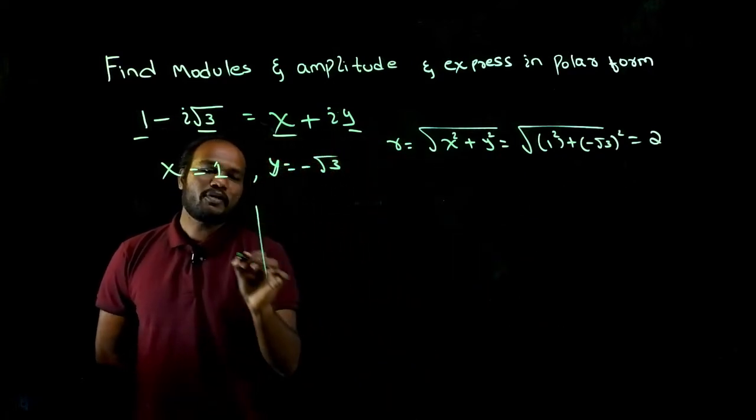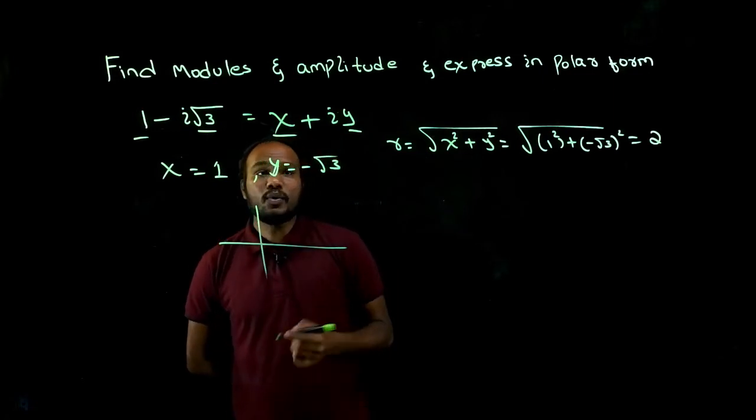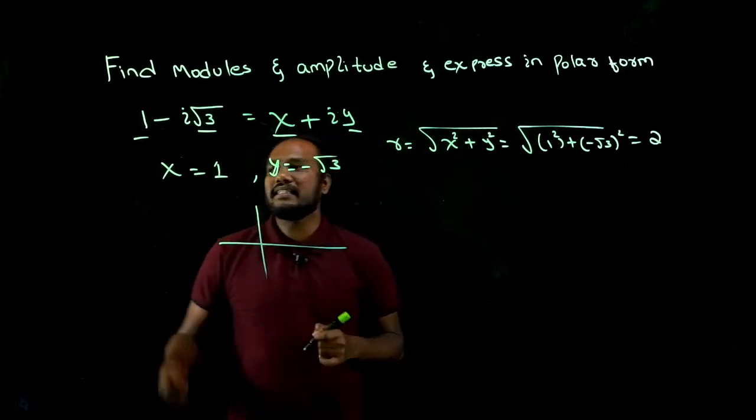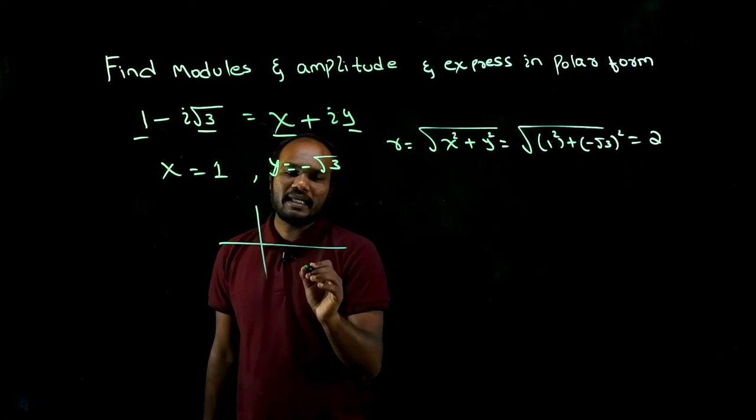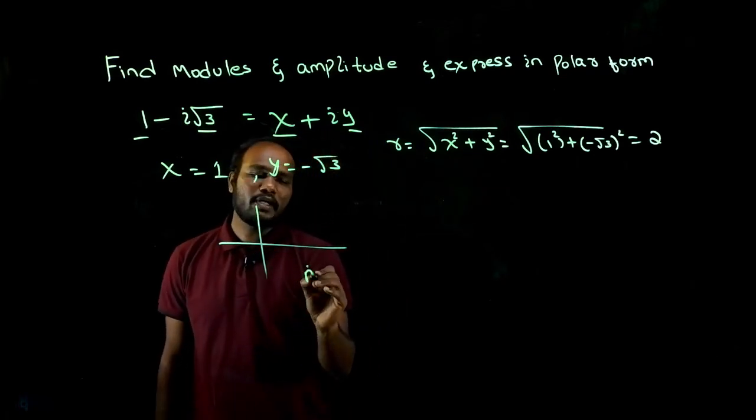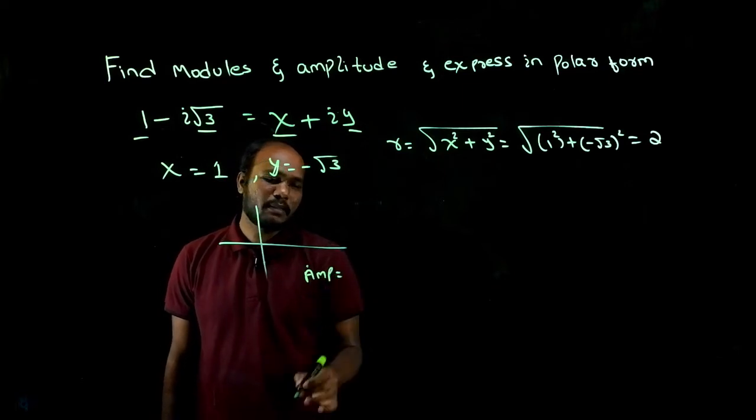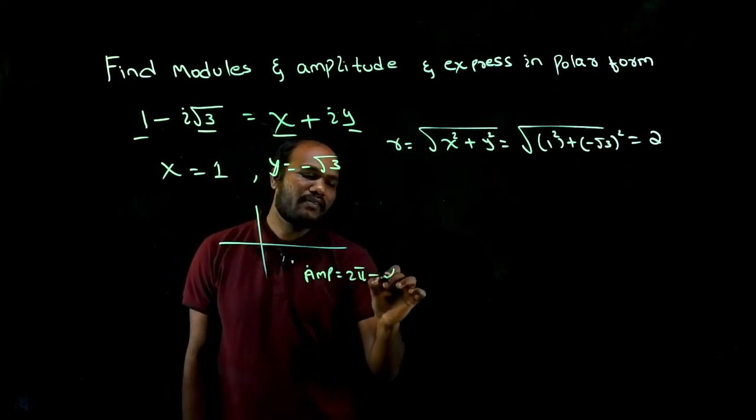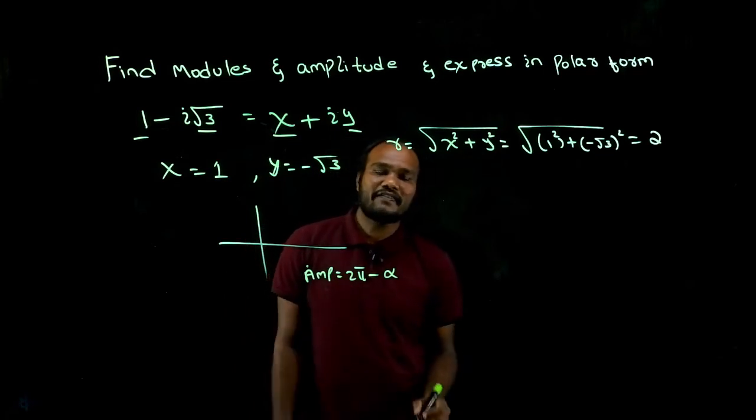Next is amplitude. To know amplitude, we have to draw or we have to know on which quadrant this thing exists. x positive, y negative. Okay, it is in the fourth quadrant. In fourth quadrant, amplitude is nothing but 2 pi minus alpha. But what is that alpha?